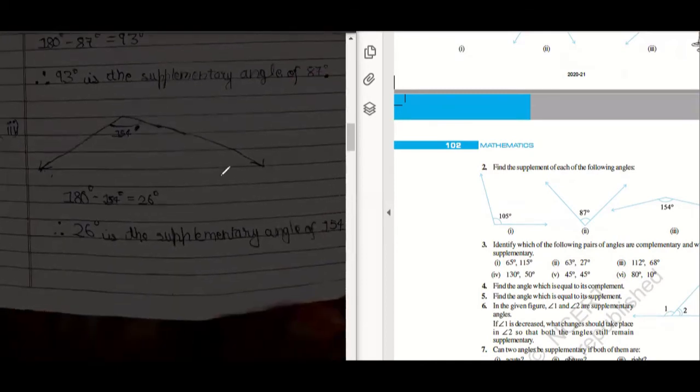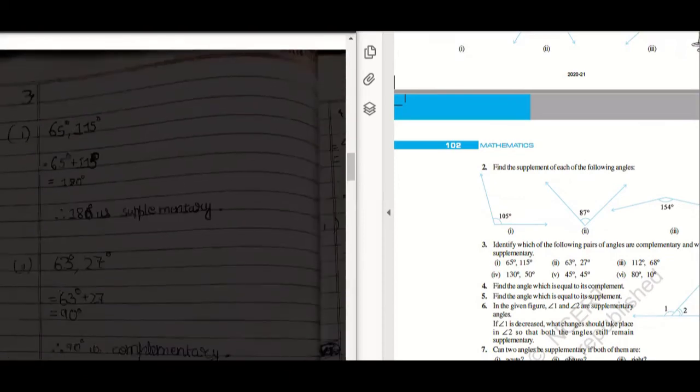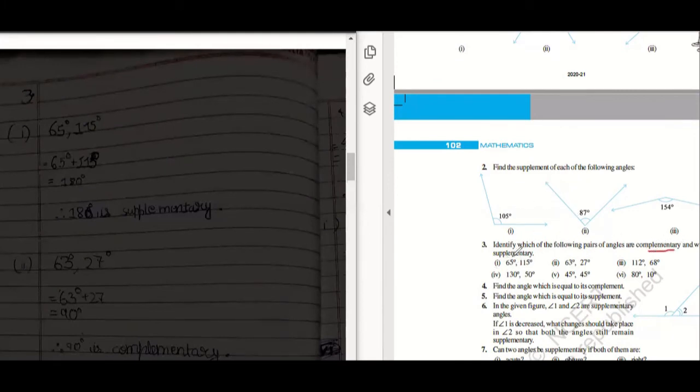Third part, 154 is 26. Let's move on to the third question. So third question is we need to identify which of the following pair is complementary and which pair is supplementary. It's a very easy question.